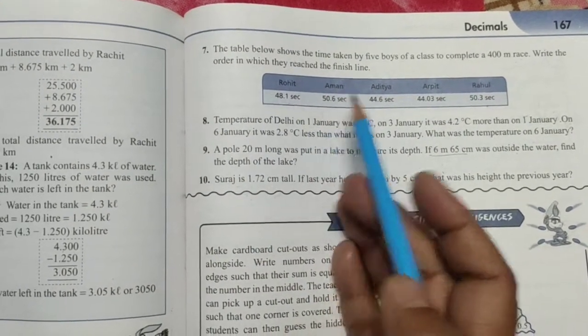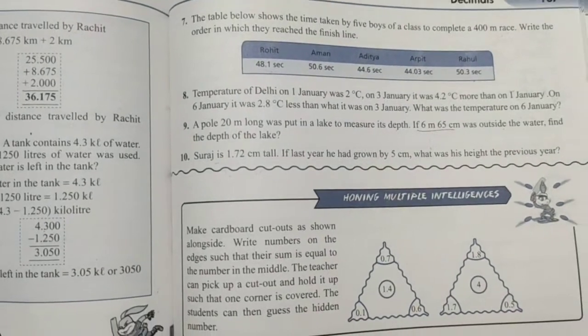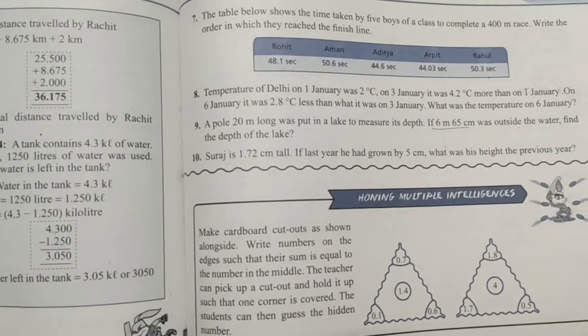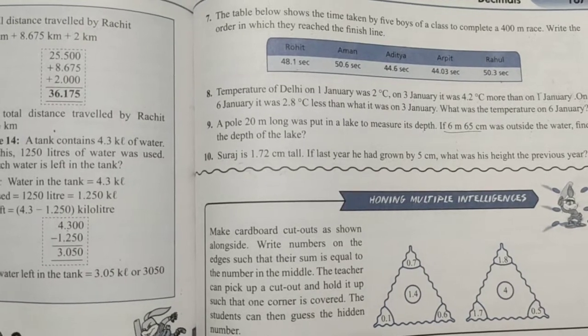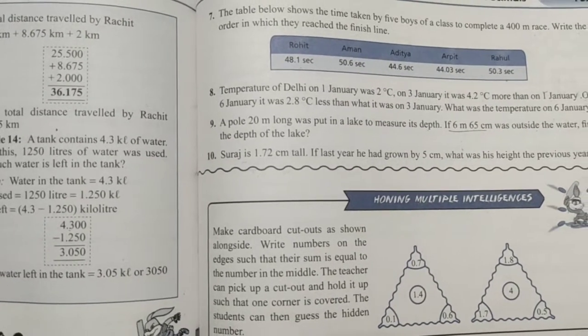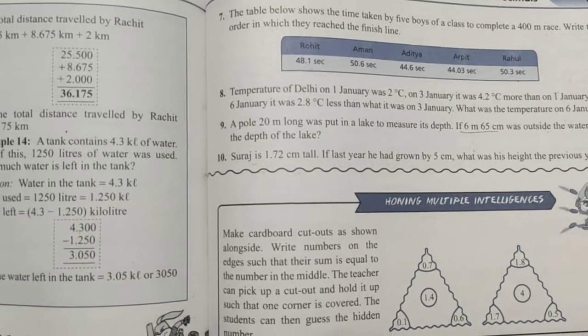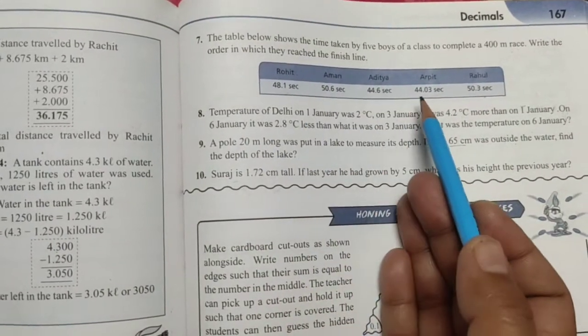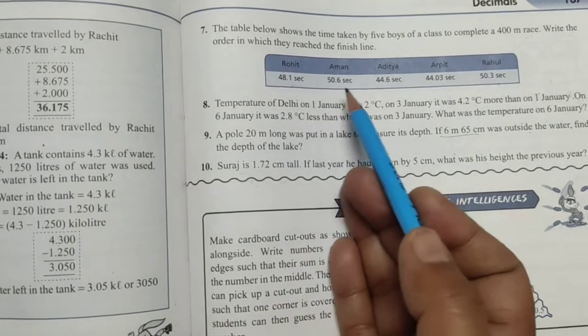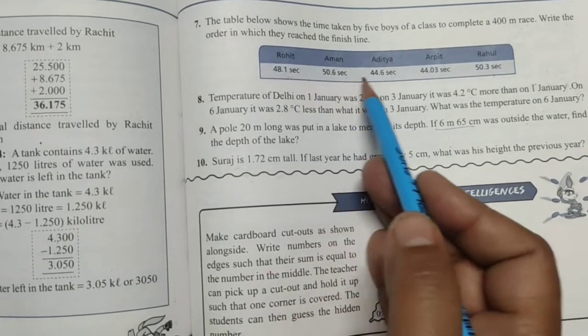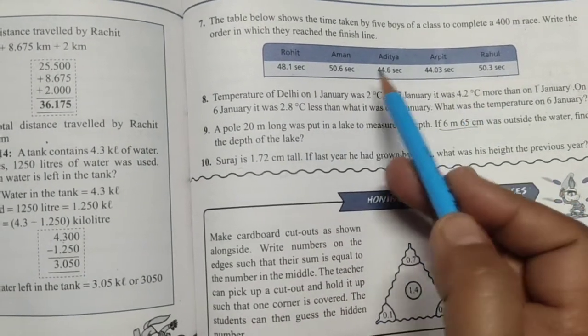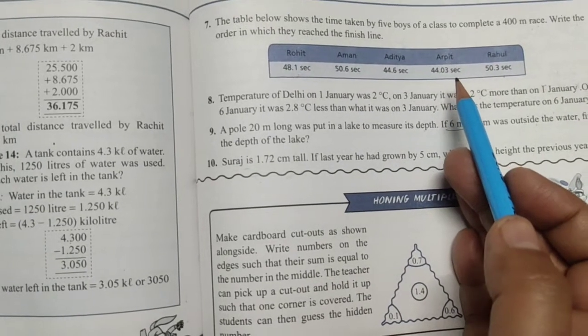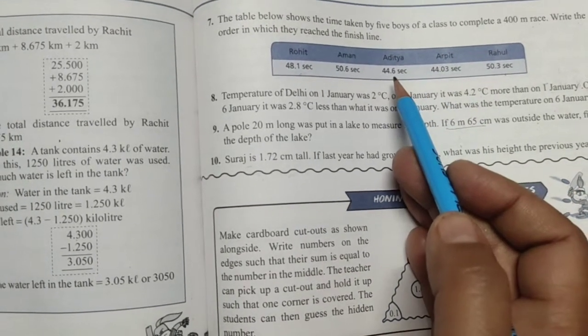We have to write that order according to which they reached the finish line. So it means which child has less time taken, the child has crossed the finish line first. Okay? So first of all, look at this table, which child is the smallest time? Check these times. Which child has taken the least time?